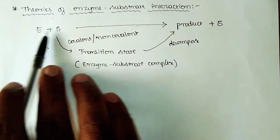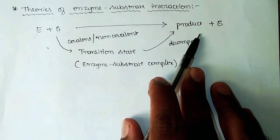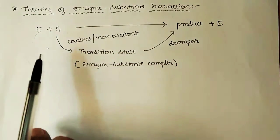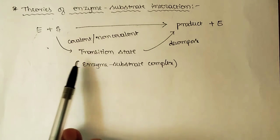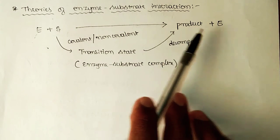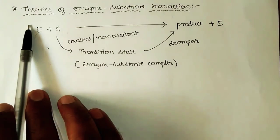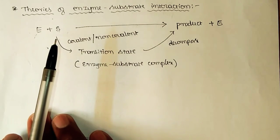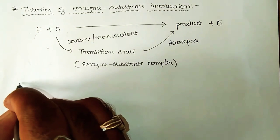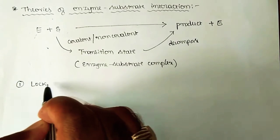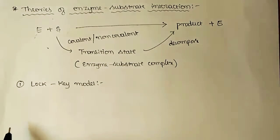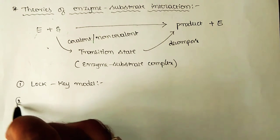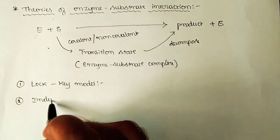One question comes to mind: what is the exact mechanistic pathway? That is, what is the actual interaction pathway between enzyme and substrate in developing the enzyme-substrate complex, and how does it decompose to give the product? To understand this, two important theories have been proposed: the first is called the lock and key model, and the second is the induced fit theory.